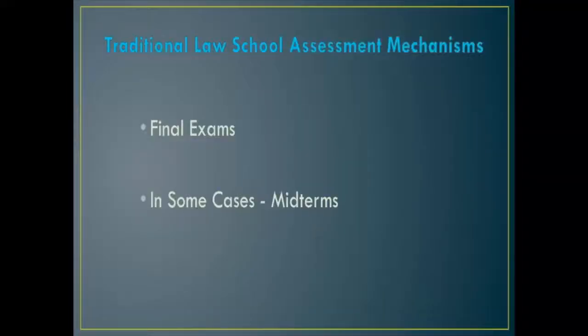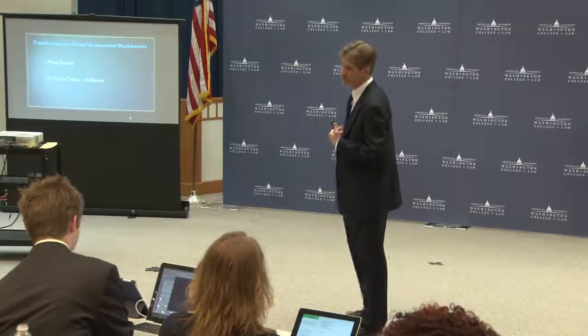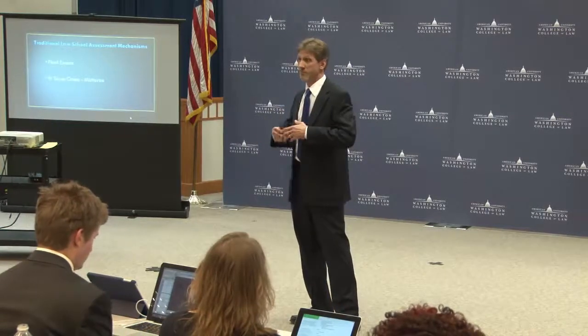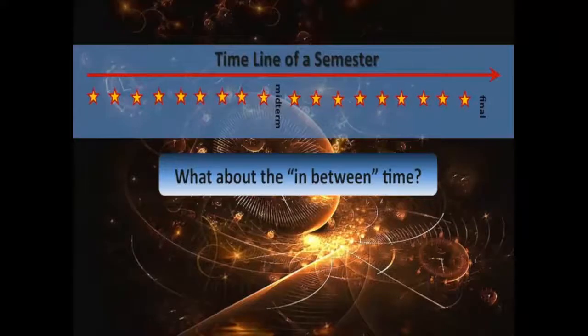In traditional law schools, what we do is we have two forms of assessment. Most law schools — certainly when I went to law school, which was 100 years ago — you went in, you got a final exam, that was it. If you didn't get it, you got your grade back telling you you didn't get it, and it's too late to fix it. A lot of law schools still operate on that principle. Others have added a midterm, but you still have the same problem. What happens in that in-between time — between when you begin your course and the midterm, and between the midterm and the final exam? You don't know whether they're getting it or not.